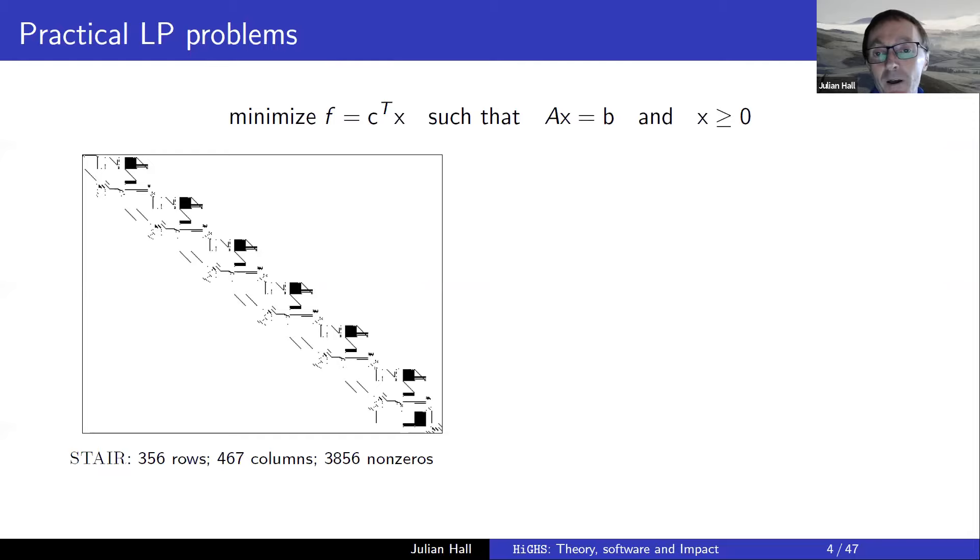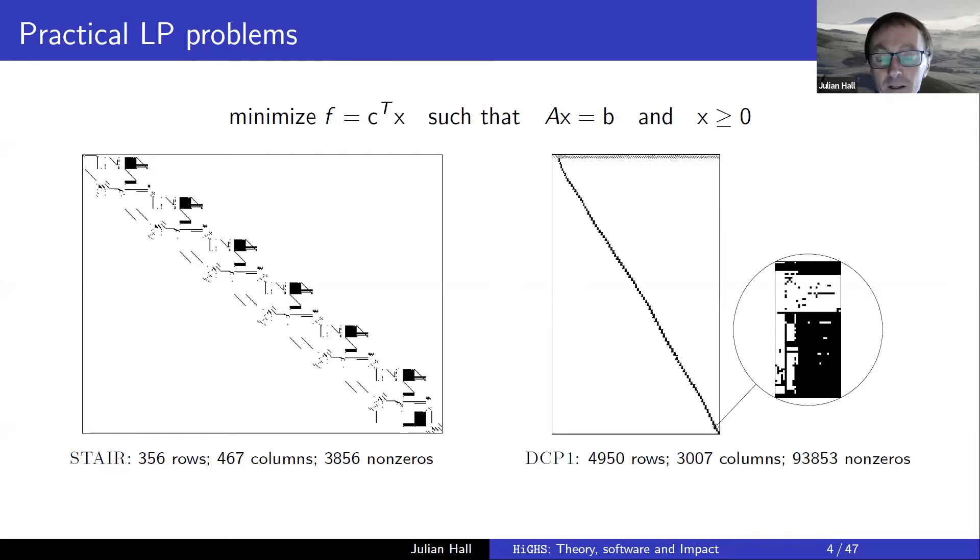The solvers in HiGHS are principally built around linear programming originally. It's got a dual simplex solver, which was written by Hwang Fuqi. I will say something a little bit later about the serial and parallel techniques. It's also got Lucas Schork's interior point solver, which Jacek's just described. We now have a mixed integer programming solver written by Leona Gottwald, and an active set quadratic programming solver written by Michael Feldmayer.